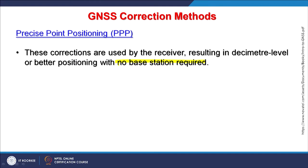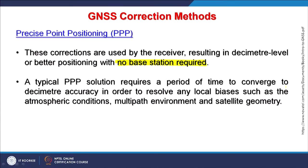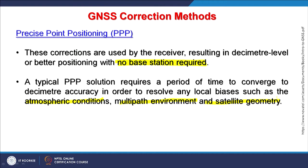In PPP — Precise Point Positioning system — the base station installed by the user is not required, but reference stations by the service providers are definitely there; without that it is not possible. A typical PPP solution requires a period of time to converge to decimeter accuracy in order to resolve local biases such as atmospheric conditions, multipath environment and satellite geometry.